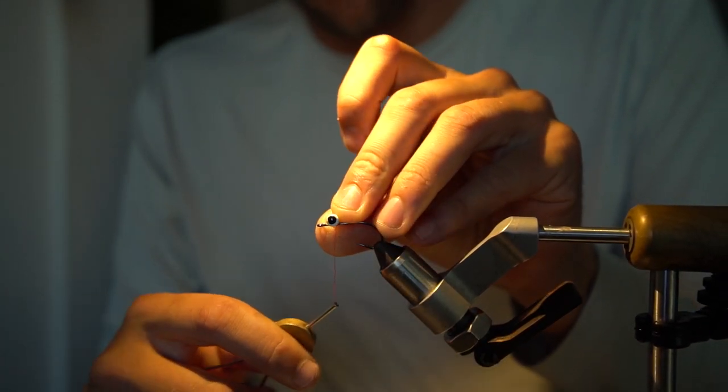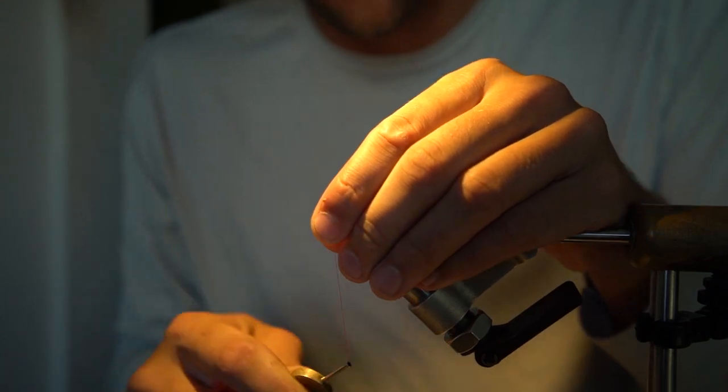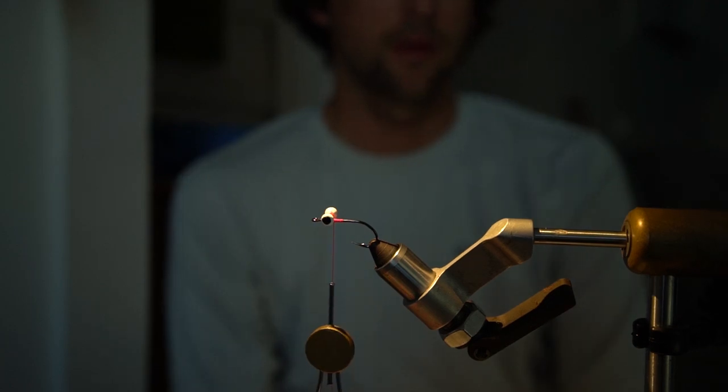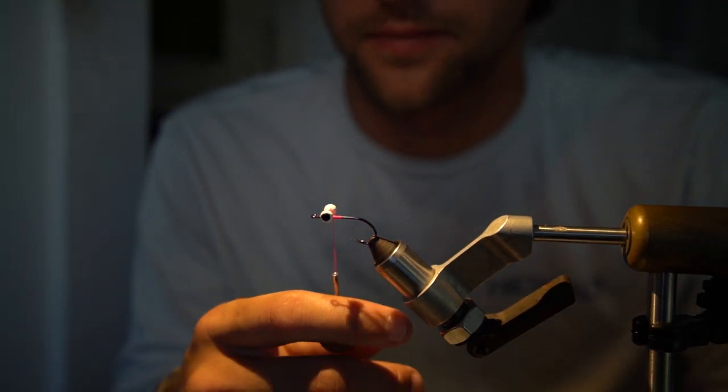First you're going to start off and you're just going to do some x-wraps with a medium dumbbell eye. I like ones that are painted up to look like eyes. It helps give you a little more realistic effect on the fly.